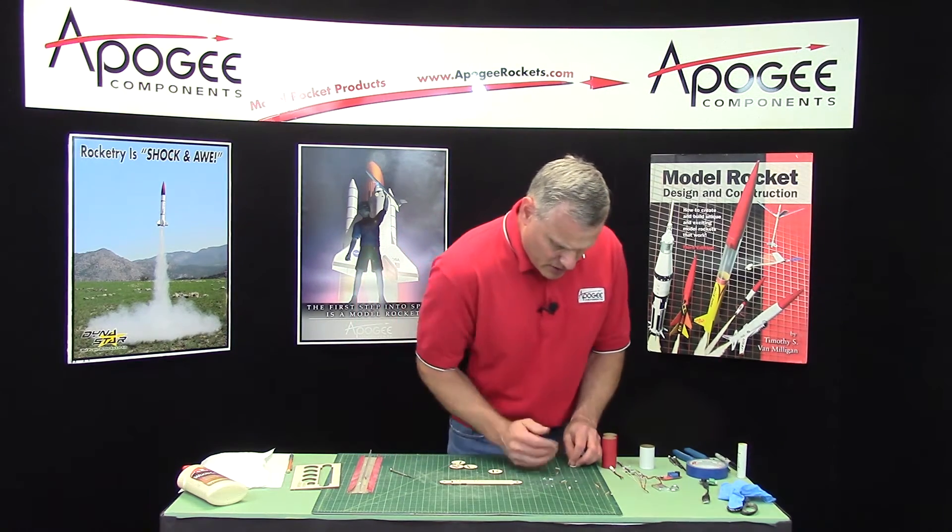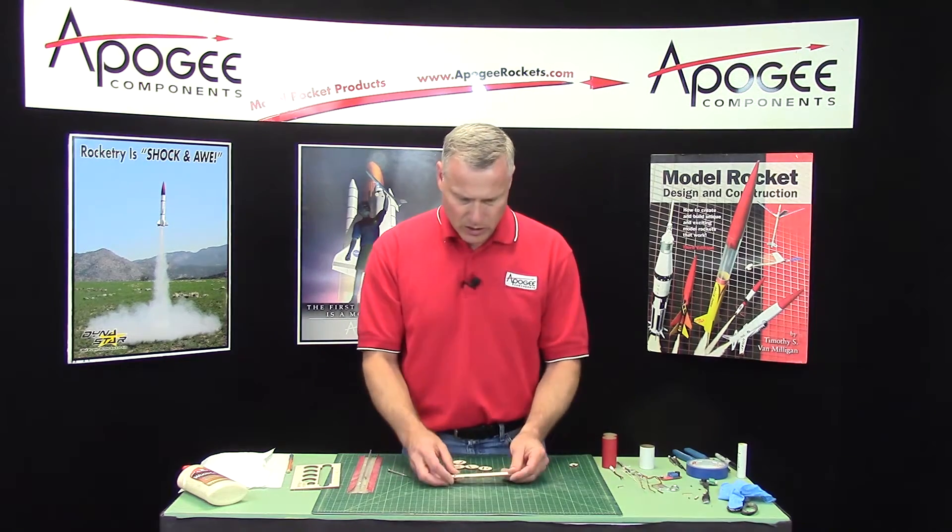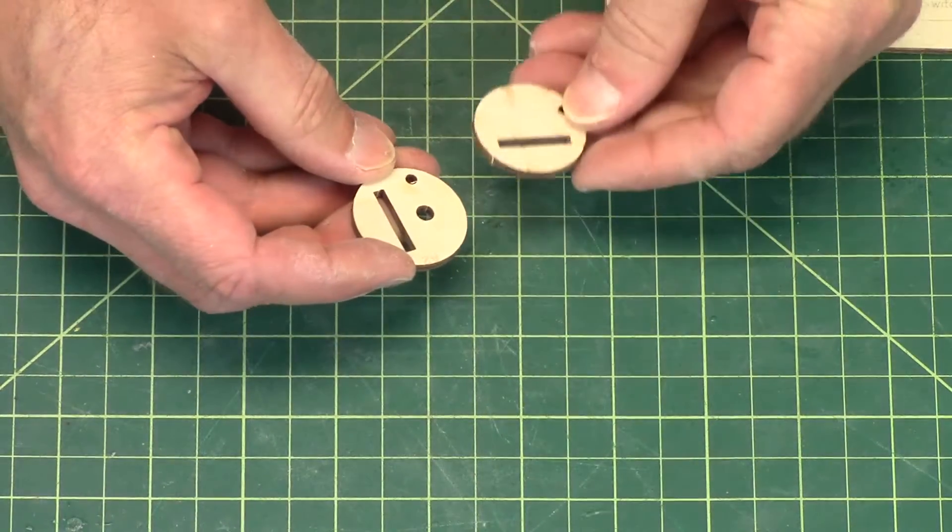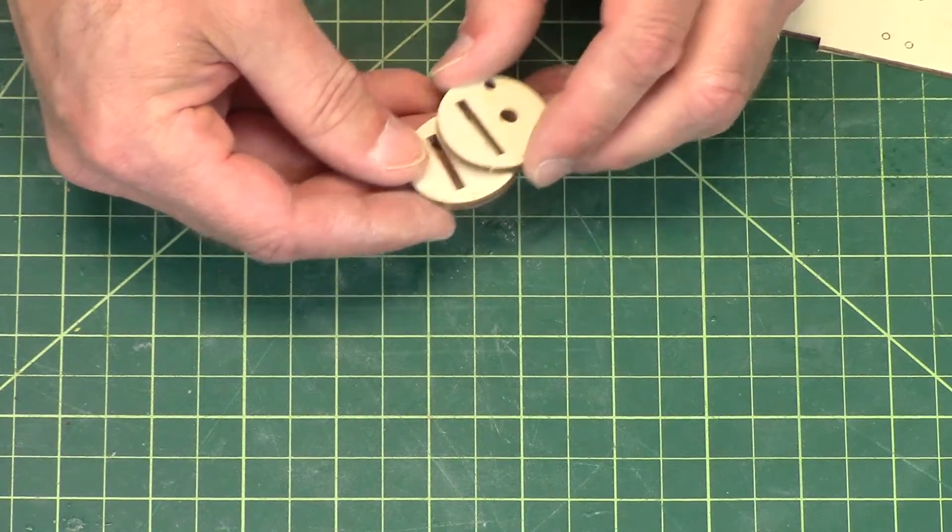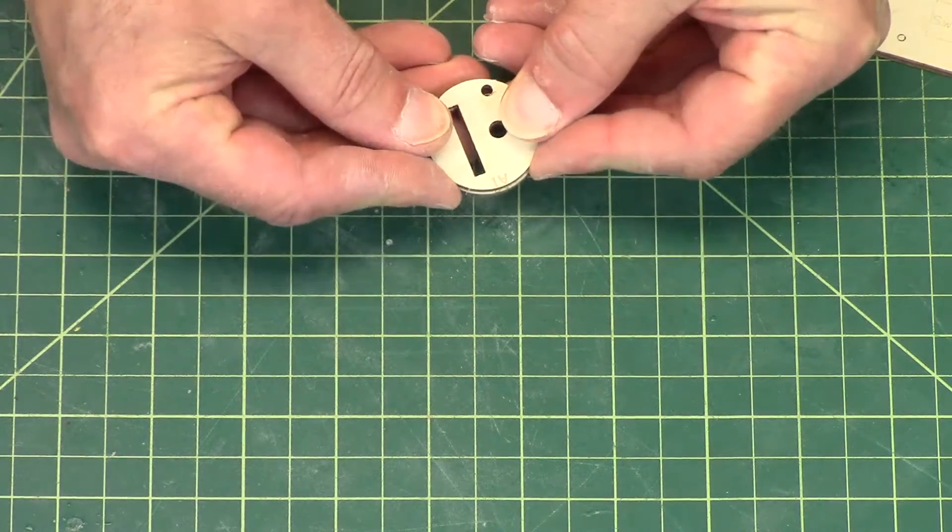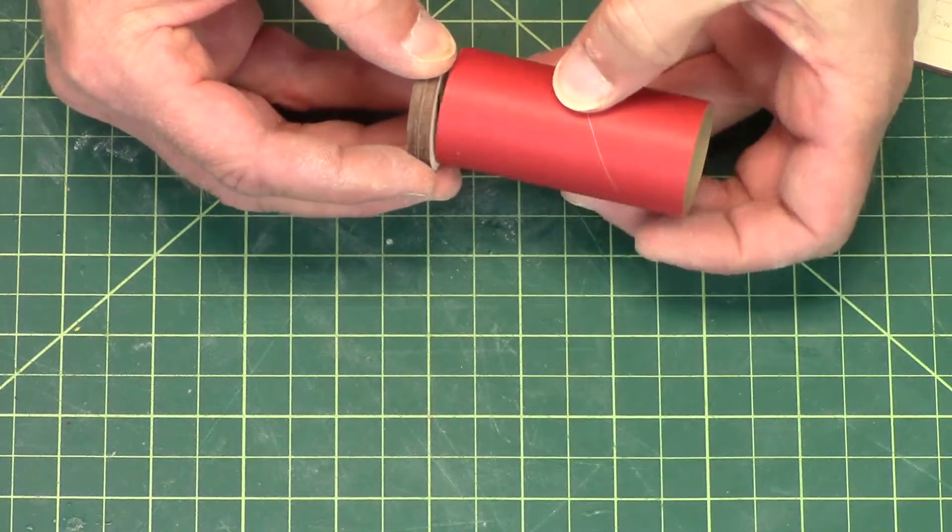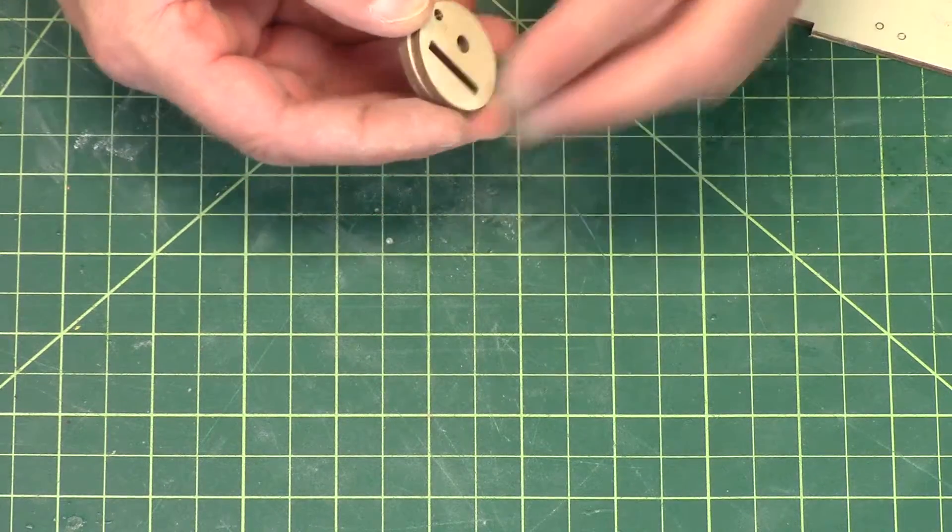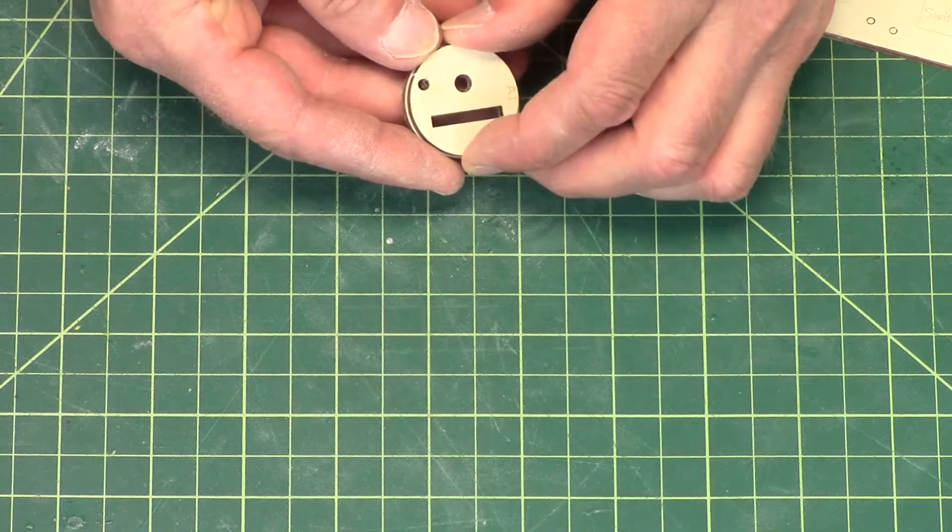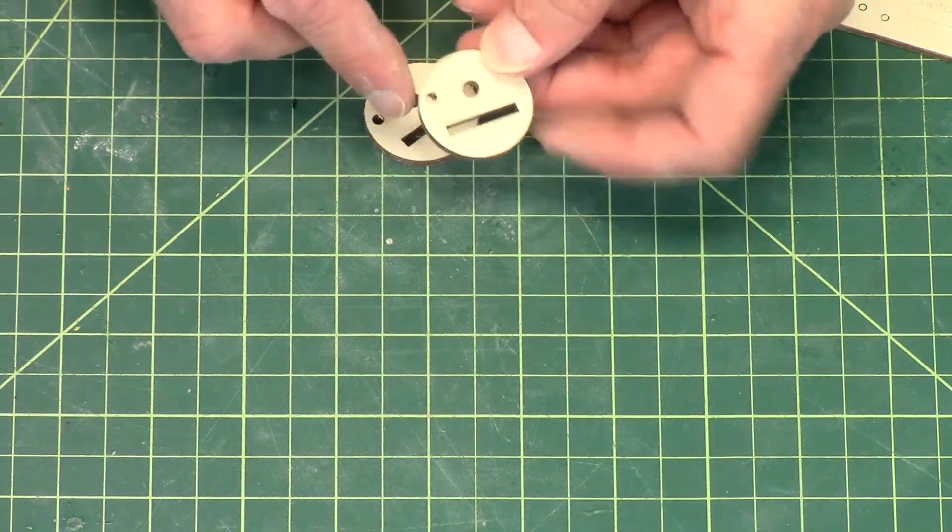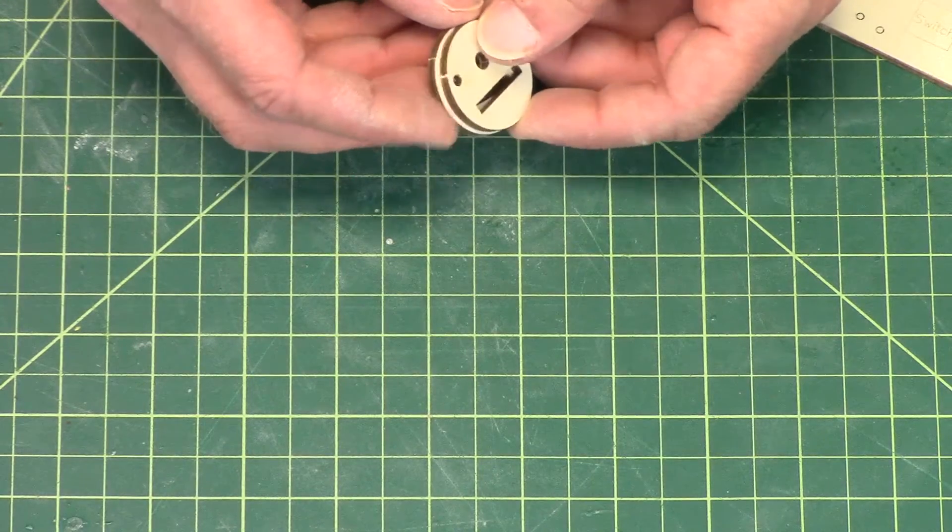Now we're going to start gluing things together. I'm going to take A1 and A2, and you'll notice that A2 is slightly bigger than A1. That's because it's going to create a little shoulder to go inside the couplers. We're going to glue these together. But before we do, on A1, the side that goes away from A2,